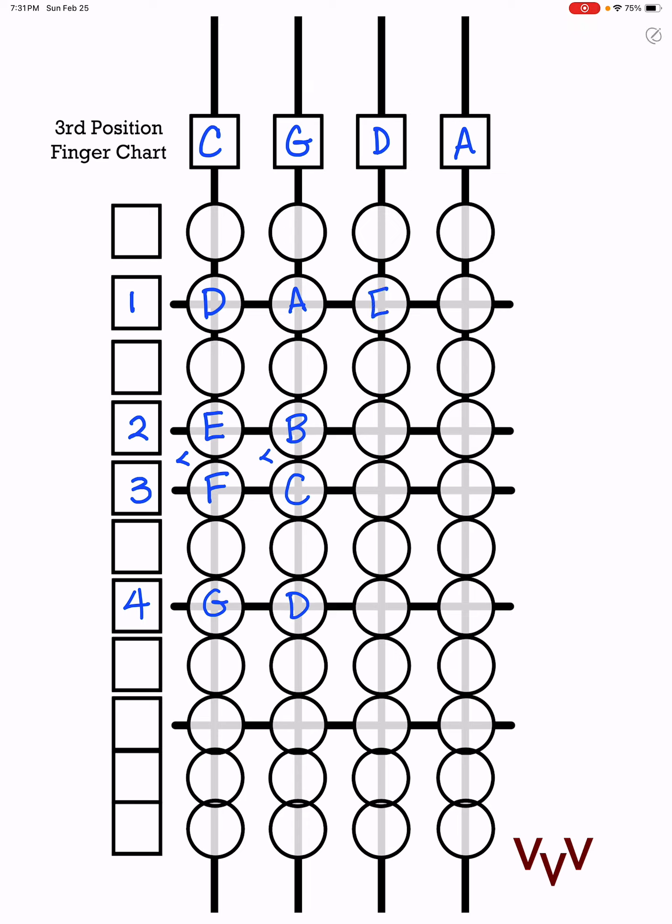D is either fourth finger or open. E, first finger. F natural is close to the first finger. I'm going to call that low two. And then we have G, A, B, and then C again is a half step.